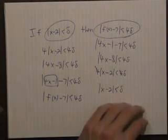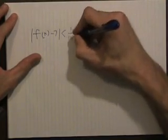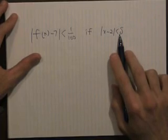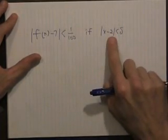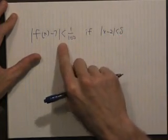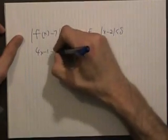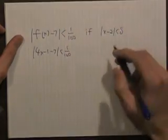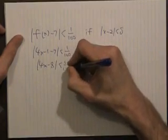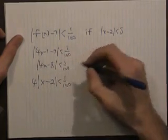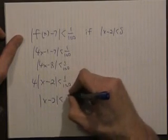Part B wants us to find a delta such that |f(x) minus 7| will be less than 1/100, given |x minus 2| < delta. We work backwards again: |4x minus 1 minus 7| < 1/100 simplifies to |4x minus 8| < 1/100, factor out the 4 to get |x minus 2| < 1/100, then divide by 4 to get |x minus 2| < 1/400.